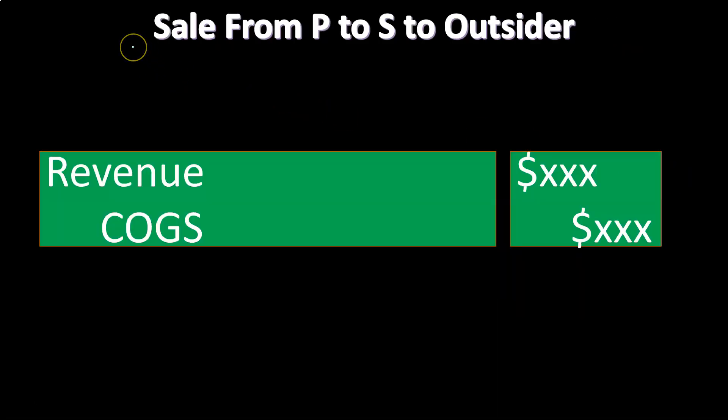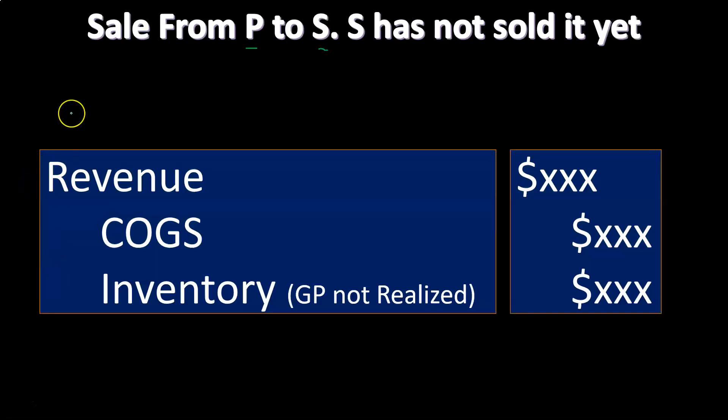We're going to spend some time on this concept: the sale from P to S then to an outsider, where we're reducing the revenue with a debit and reducing the cost of goods sold. And then the sale from P to S where S has not yet sold it. We can apply some of the same principles to what if it was the other way — this is a downstream sale from parent to subsidiary — and then what happens if it's an upstream sale from subsidiary to parent? Similar concepts apply, and we'll start to work through that in future presentations.